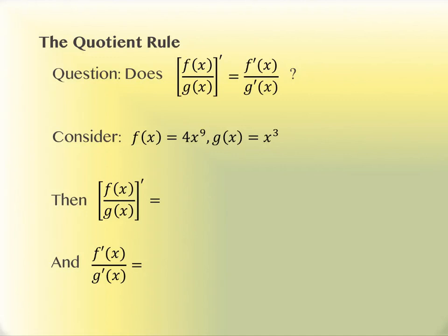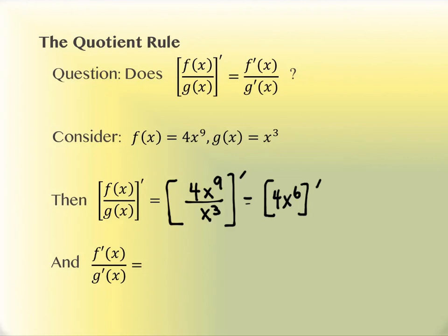Taking the derivative of the whole, we write 4x⁹ over x³ and take the derivative, working inside out. If we simplify the inside first, 4x⁹ over x³ simplifies to 4x⁶. Then the derivative of 4x⁶ is 24x⁵. So this is the correct derivative because we simplified first and then found the derivative.